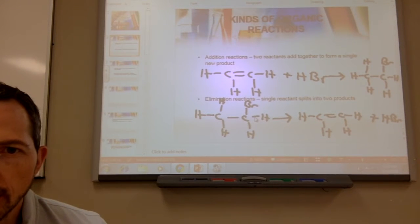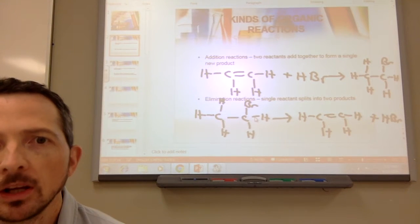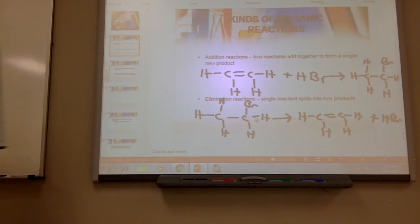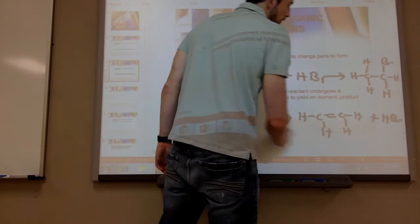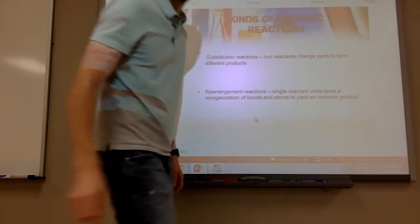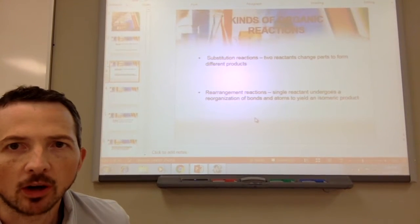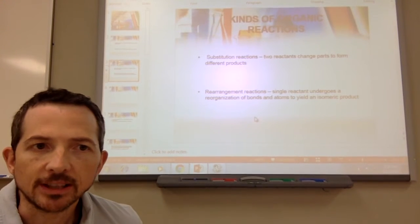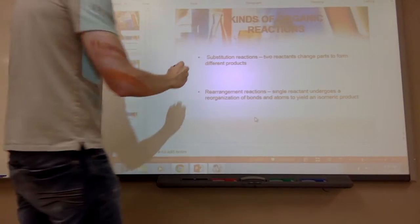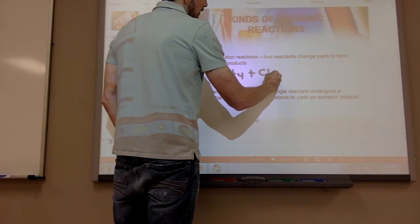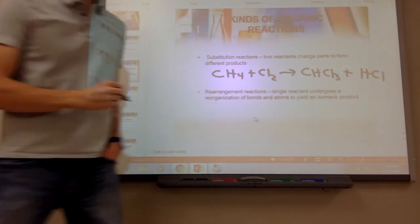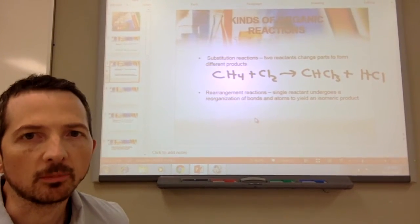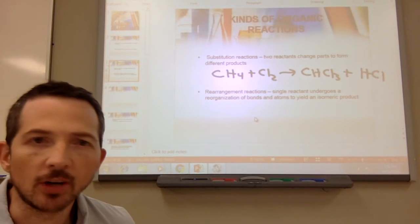The next type of reaction we'll see is a substitution reaction. In a substitution reaction, two reactants change parts to form different products. This is going to be like your single displacement or double displacement reaction from General Chemistry. In this reaction, a chlorine substituted in place of hydrogen — the chlorine and the hydrogen switched positions — very similar to the double displacement reaction.